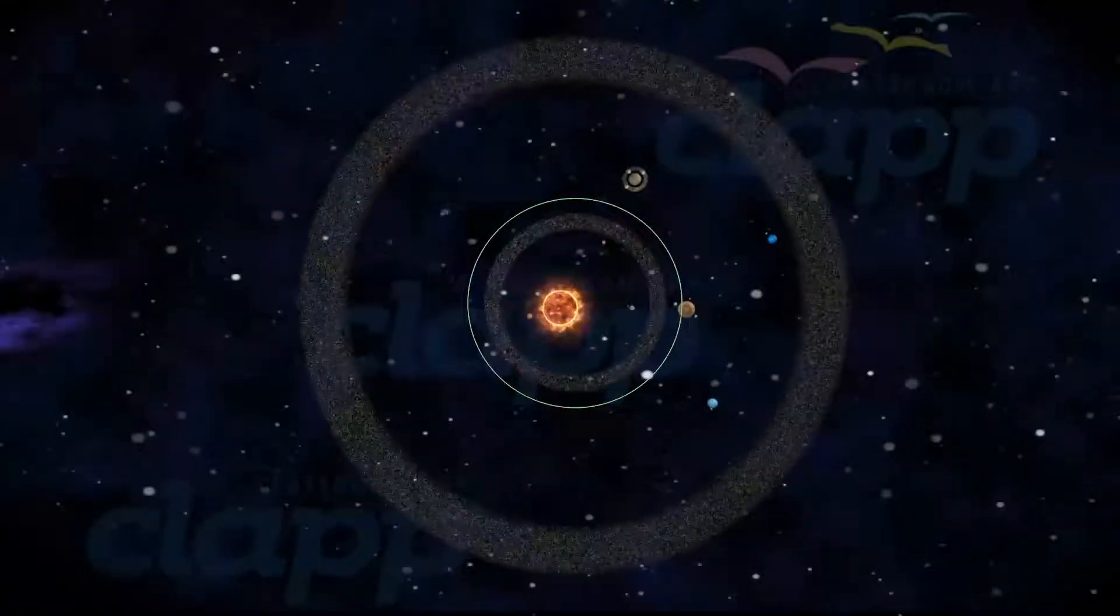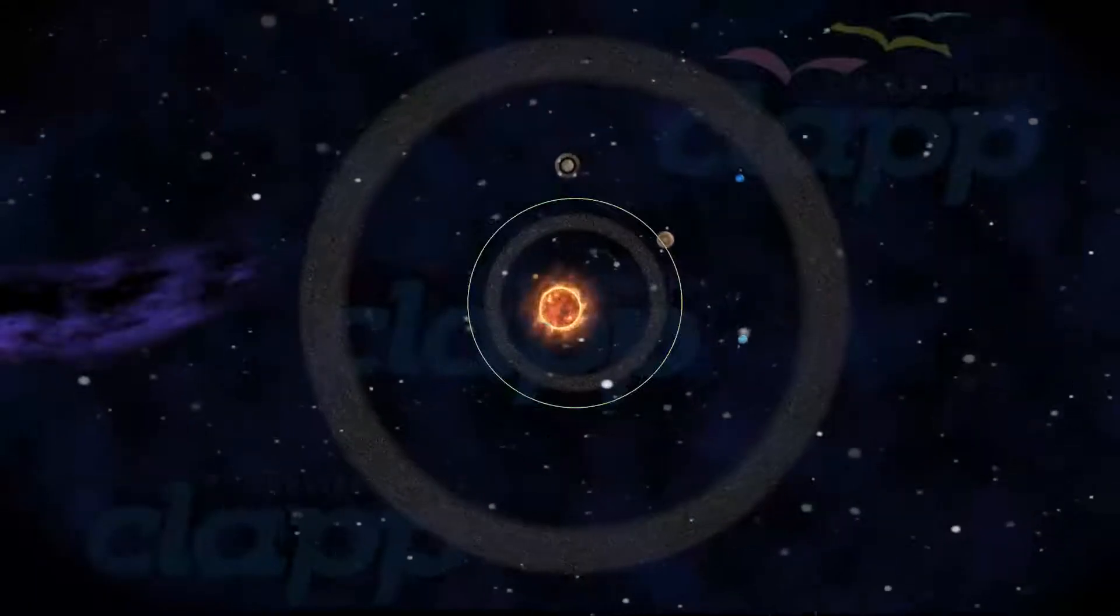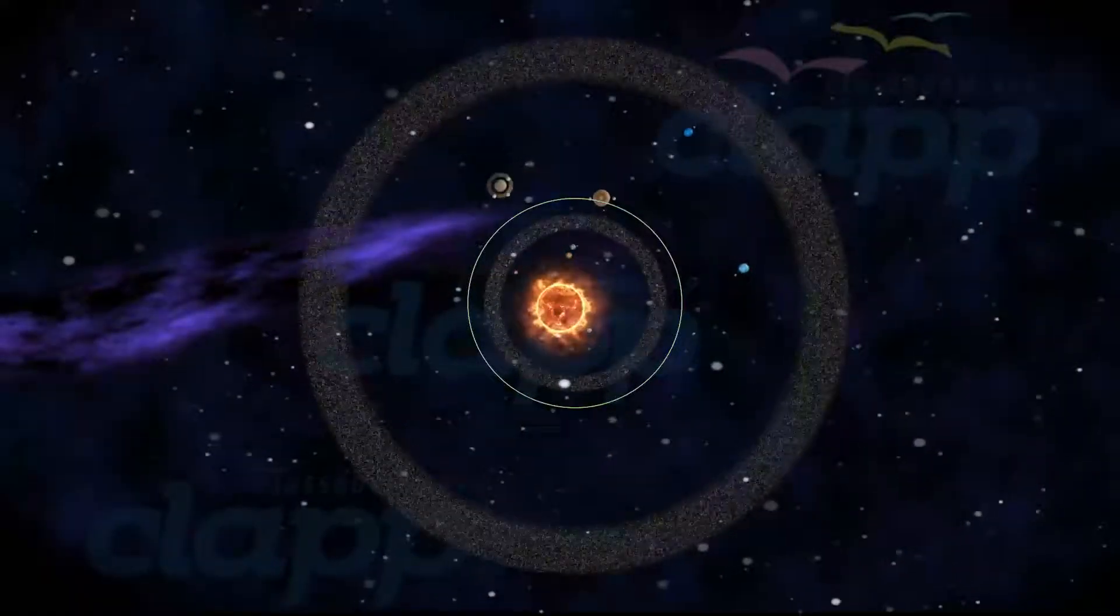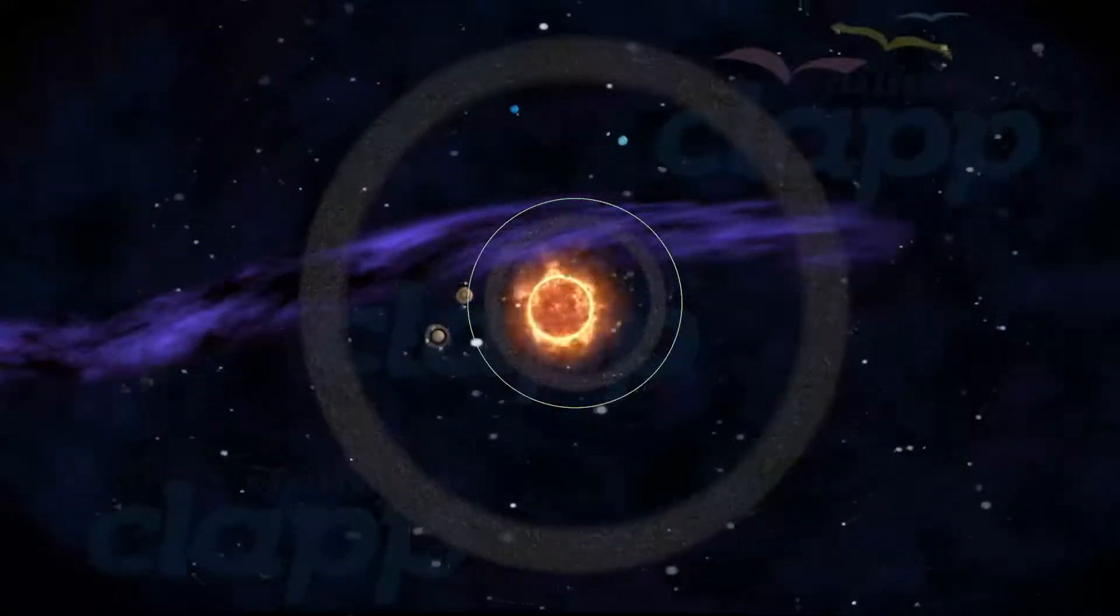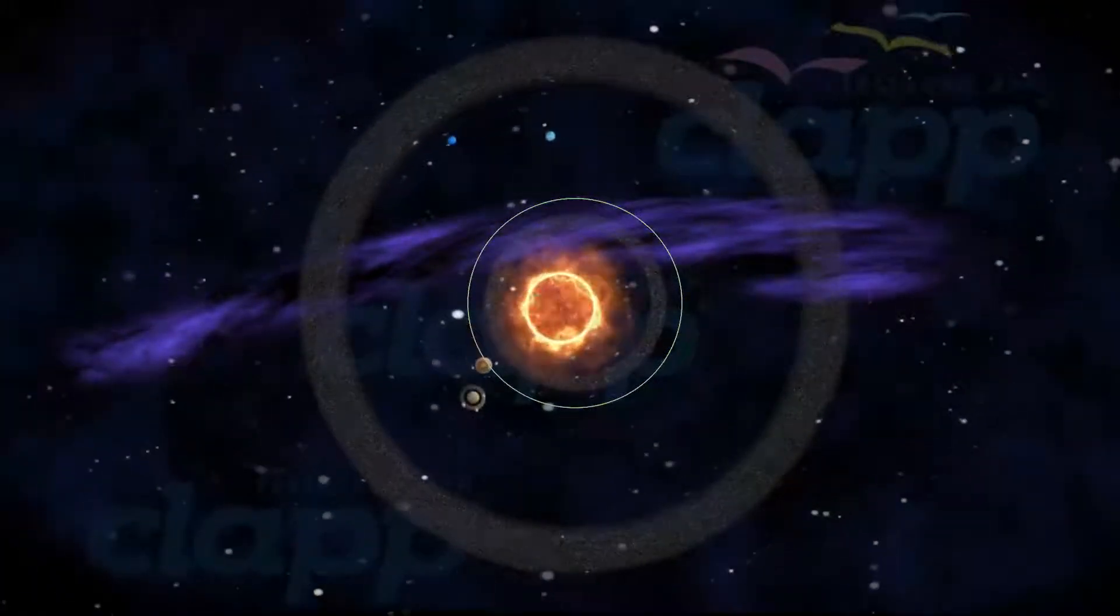Since Jupiter travels in an elliptical orbit around the Sun, its distance from the Sun varies from 741 million kilometers to 817 million kilometers.